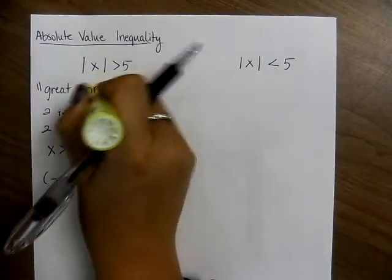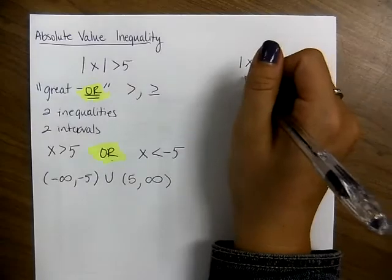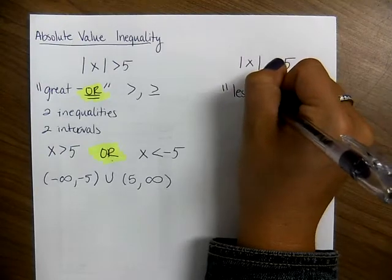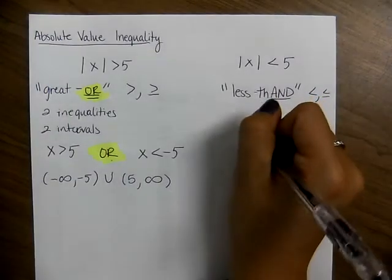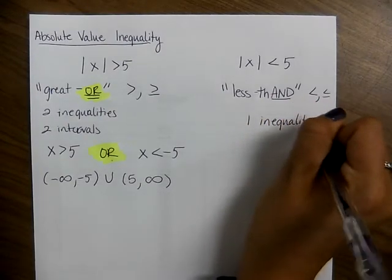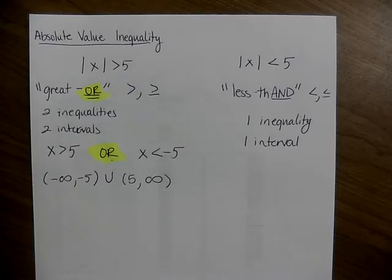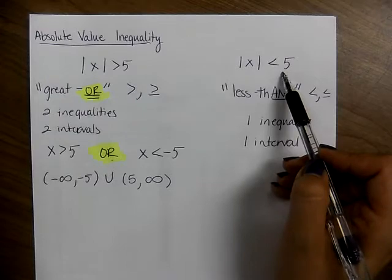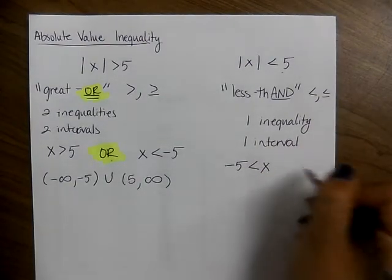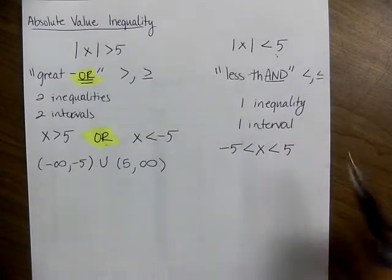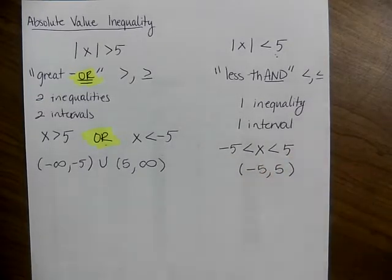Any time you have the greater than case, you're going to have two inequalities and two intervals for your solution. For the less than case — think of it as 'less than' — this works for less than or less than or equal to and produces one inequality and one interval. You take the value on the right side, change the sign to negative 5, giving you negative 5 is less than x which is less than 5, yielding the solution (negative 5, 5).